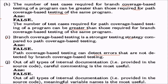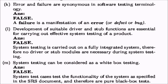Statement j: out of all types of internal documentation in source code, careful commenting is the most useful. This is false — meaningful variable names are the most useful form of internal documentation. Statement k: error and failure are synonymous in software testing terminology. This is false — failure is the manifestation of an error or defect; the two are not the same.